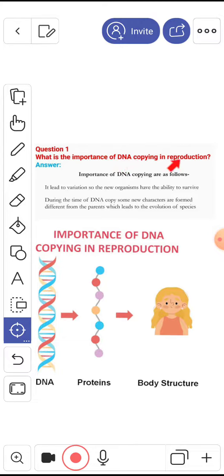What is the importance of DNA copying in reproduction? The importance of DNA copying is as follows: it leads to variation. The new organisms have the ability to survive. DNA copying is important because the characteristics we get from parents, mother and father, are due to this DNA copying. DNA copying is a part of reproduction, and there is variation.